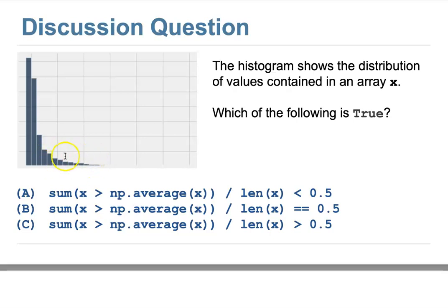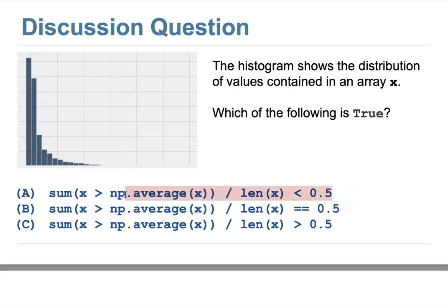When the average moves to the right, there are fewer numbers greater than the average. Since the median is at 50%, but the average has shifted right, less than half of the numbers will be greater than the average. So when you divide by the total number of elements in the array, the result will be less than 50%. That's the answer to our discussion question.